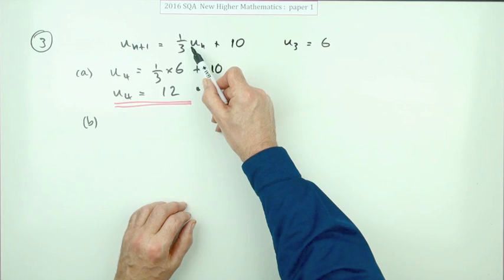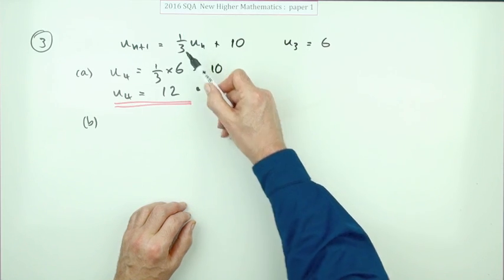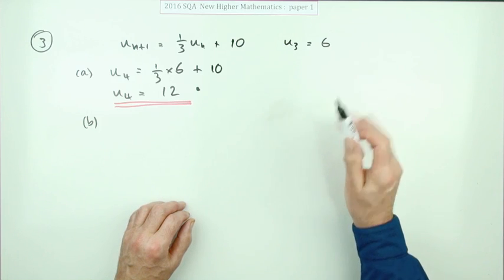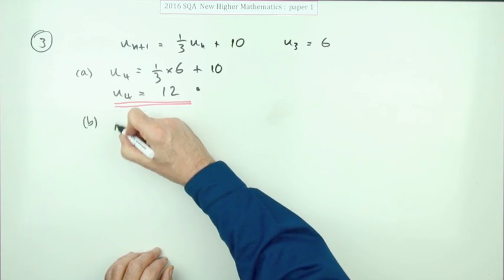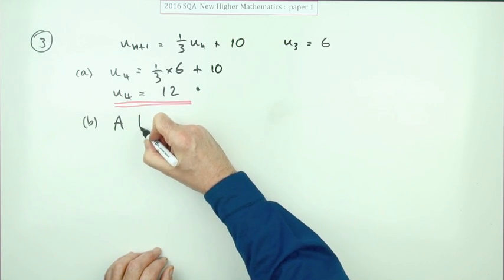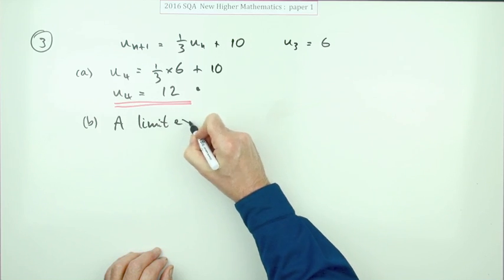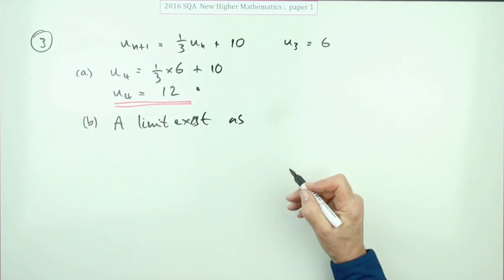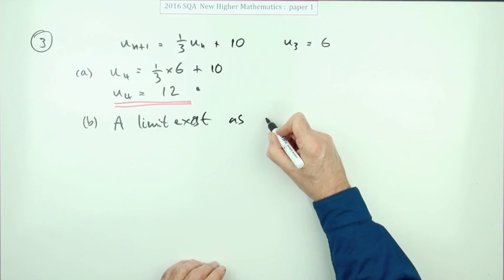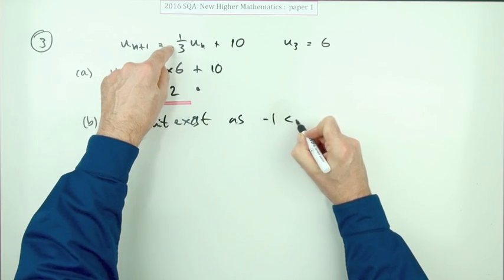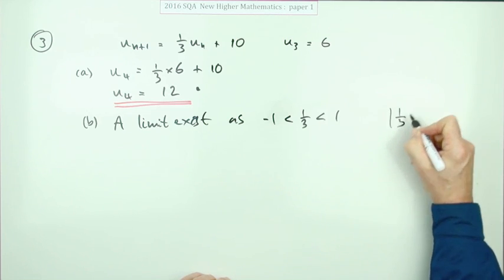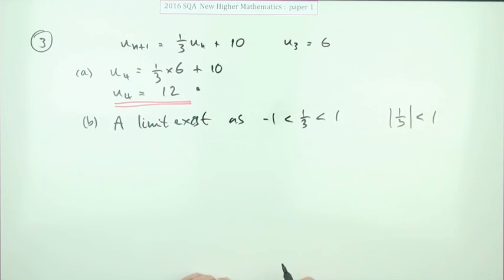If that was staying the same, like one times, it would just get bigger and bigger. So it has to be a proper fraction, not just a fraction. A fraction could be something like three upon two. So you'd have to write a statement that says: a limit exists as that coefficient is a proper fraction. State it either as it's between negative one and one, or you can say the absolute value of it is less than one.